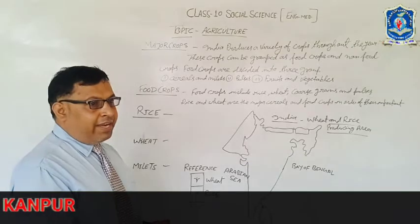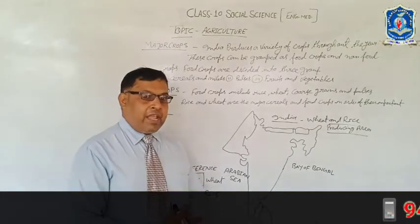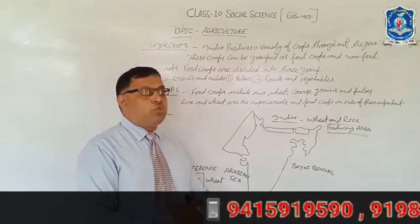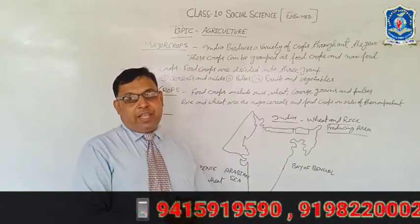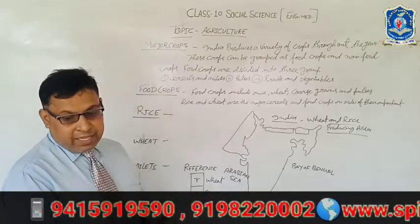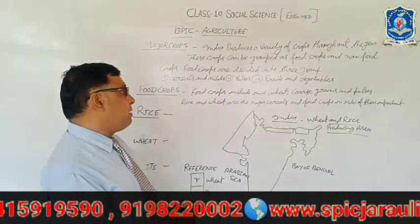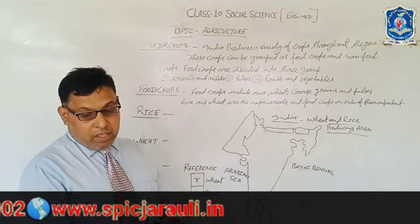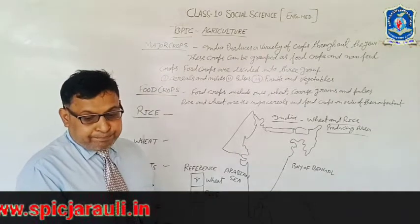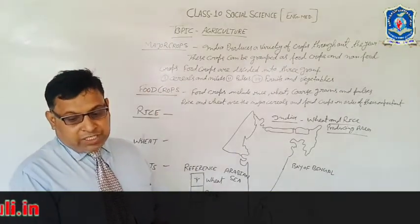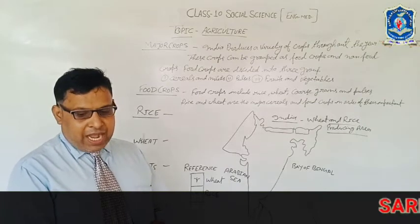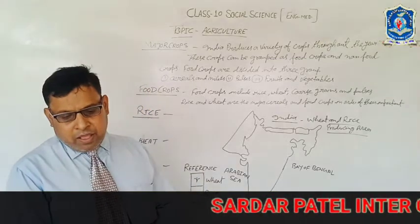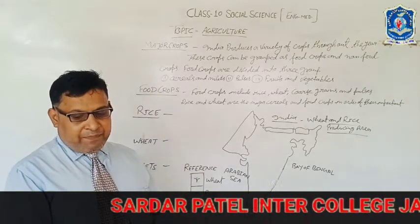इसके अलावा भारत के अन्य राज्यों में केवल वर्षा के समय पर ही राइस की फसल की जाती है, लेकिन वेस्ट बंगाल में पूरे वर्ष यह फसल की जाती है। इसलिए भारत में प्रथम नंबर पर राइस का उत्पादन करने वाला राज्य वेस्ट बंगाल है। इसके अलावा उत्तर प्रदेश, आंध्र प्रदेश, तेलंगाना, तमिलनाडु, केरला, महाराष्ट्र कोंकण तट भी राइस उत्पादक राज्य हैं।